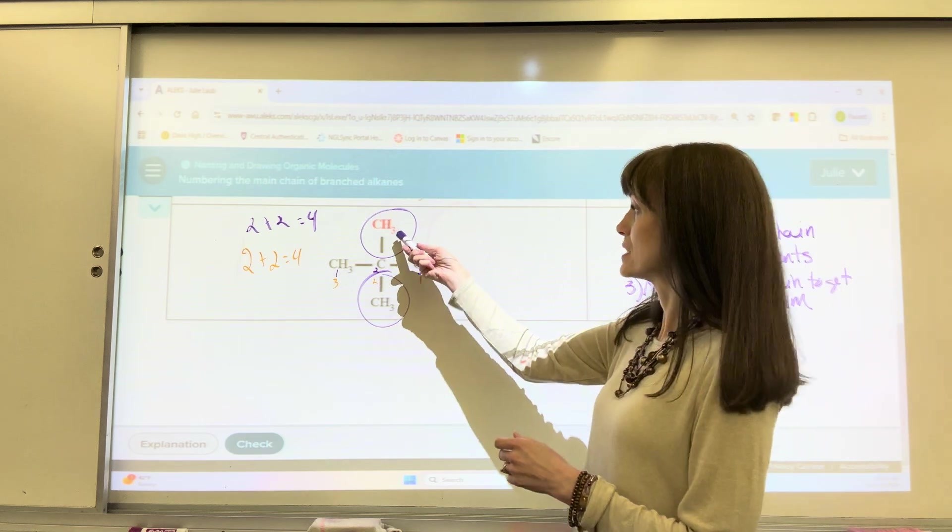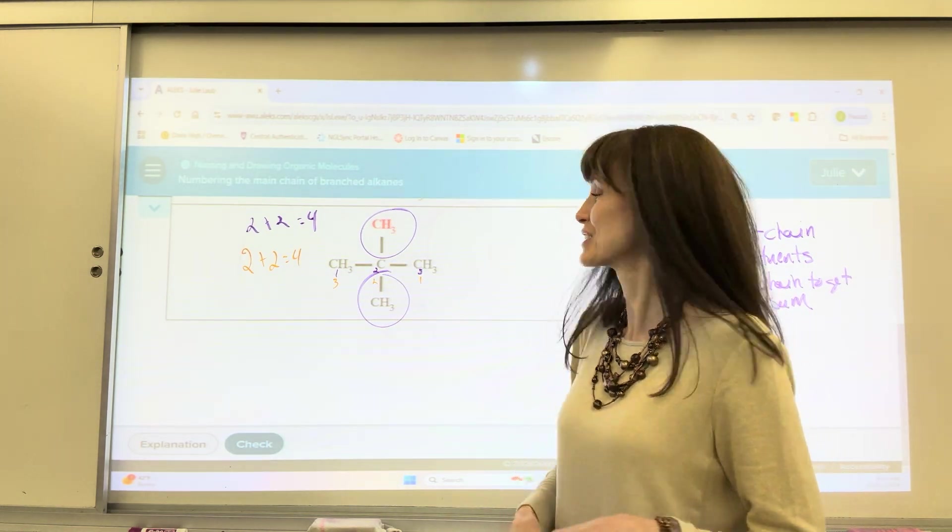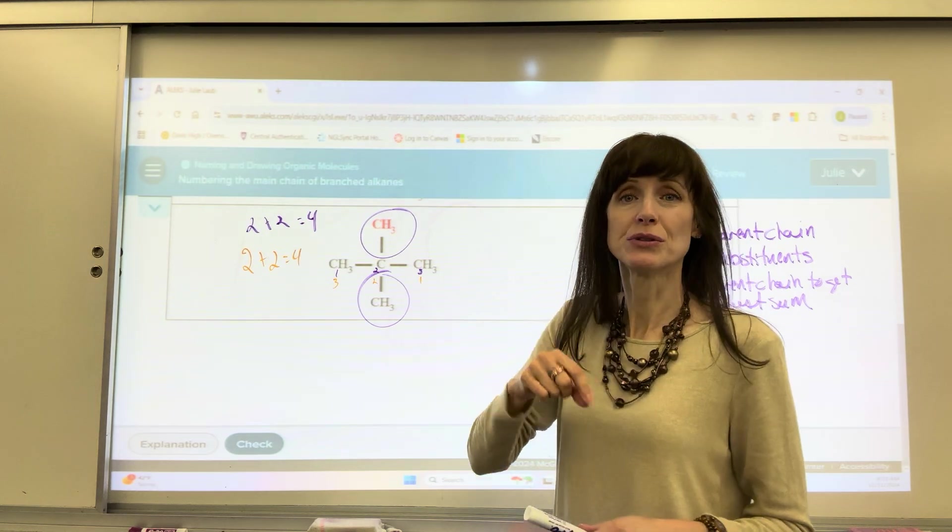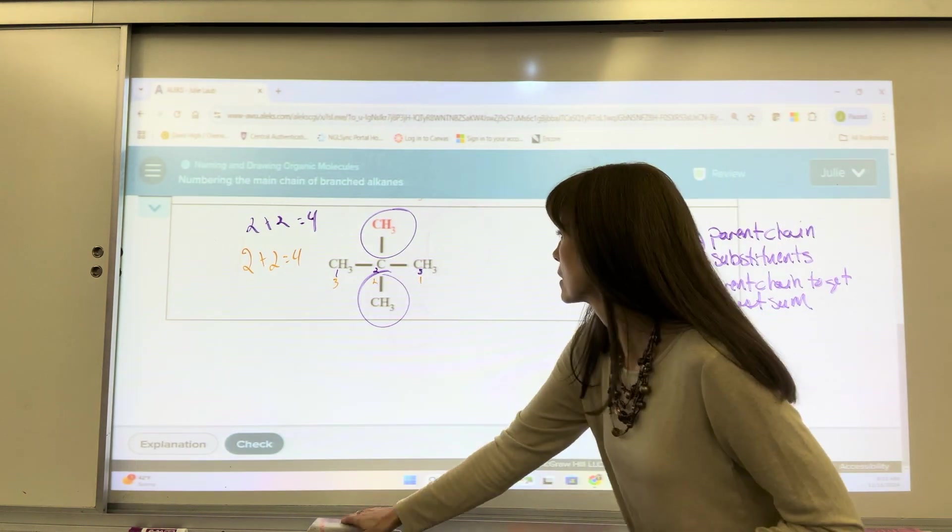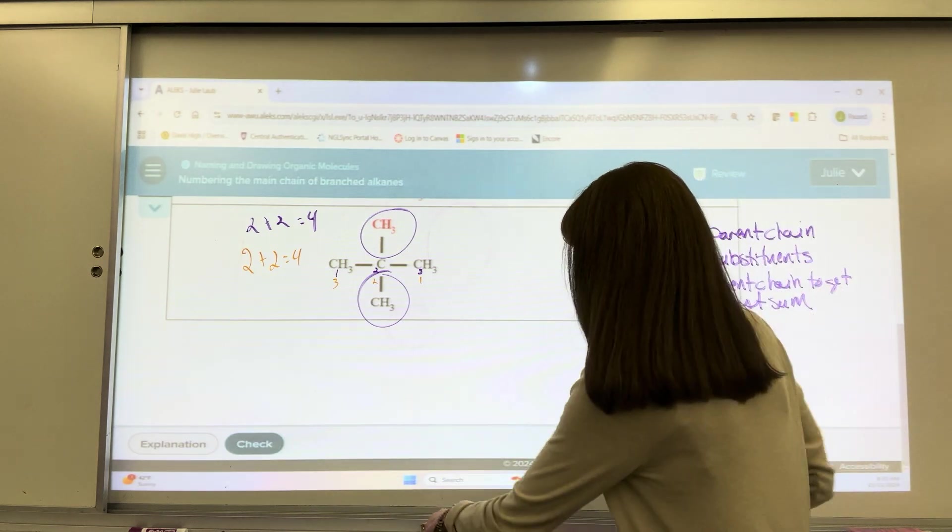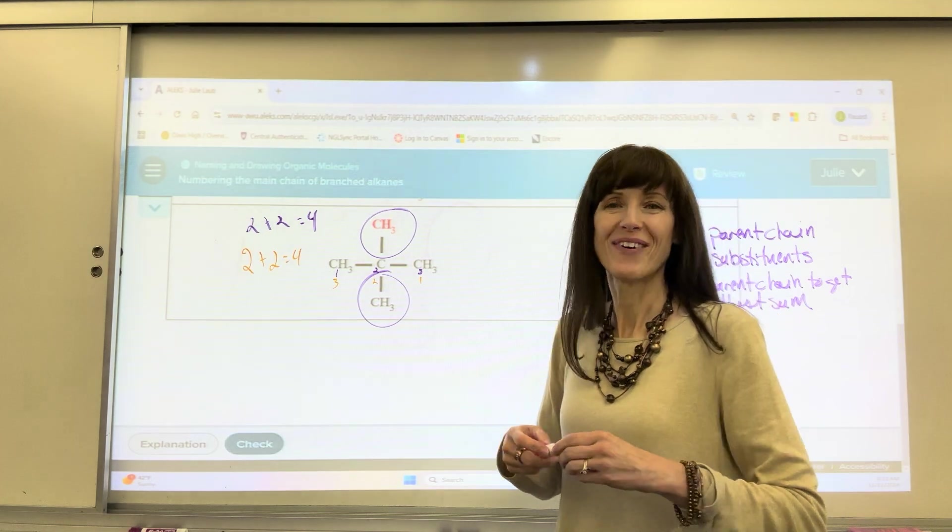We're going to have our substituents at the number 2 carbon, the 2 location. So this would be a 2, 2-dimethyl propane. Nice. And then my answer here, I would simply put a 2. I put a 2 right there. Okay? Well done.